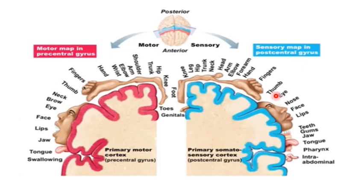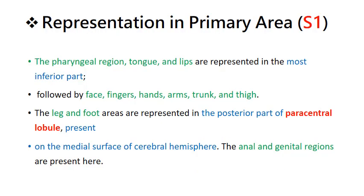This is the sensory map and this is the motor map — similarities are there. You will find intra-abdominal, pharynx, tongue, teeth, gums, jaw and lips, face, nose, eyes, thumb, hip, leg, knee, foot, and genitals towards the medial side. The most inferior part is the pharyngeal region, tongue, and lips, followed by face, fingers, hands, arms, trunk, thigh, then leg, foot, and the paracentral lobe on the medial surface with anal and genital regions.